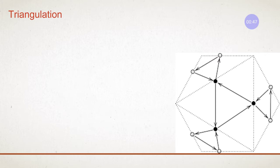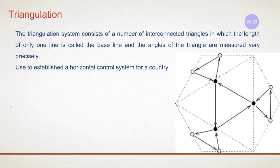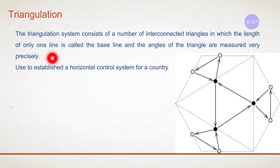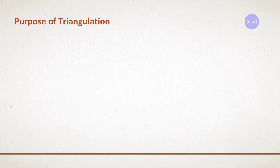Before we get into the purpose, we will once again brush up and understand what triangulation is. The triangulation system consists of a number of interconnected triangles, as shown in the figure. The length of one of its lines or sides is called the baseline, and the angles of the triangle are measured very precisely — not only the angles but also the baseline is properly measured, and all three angles are measured.